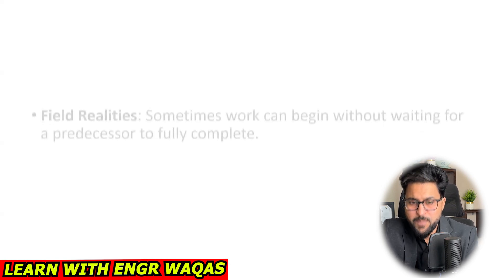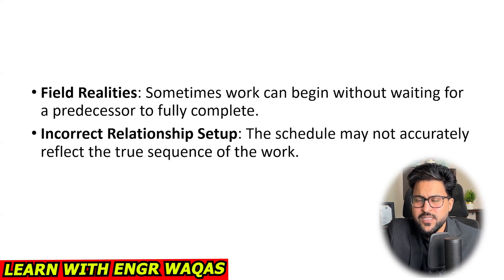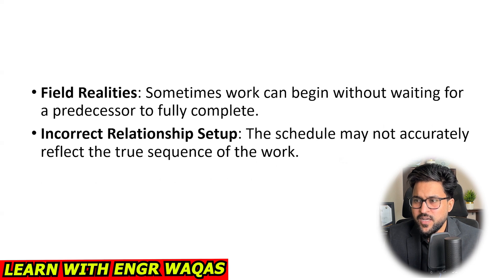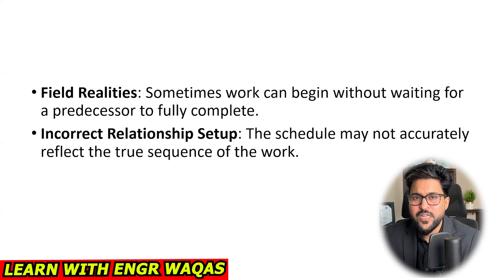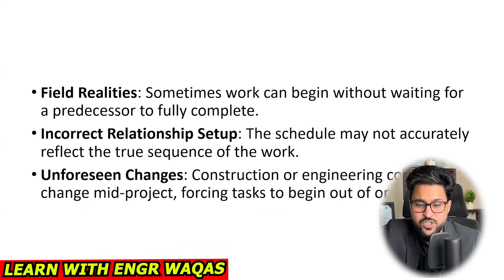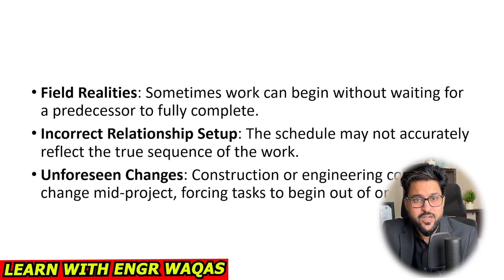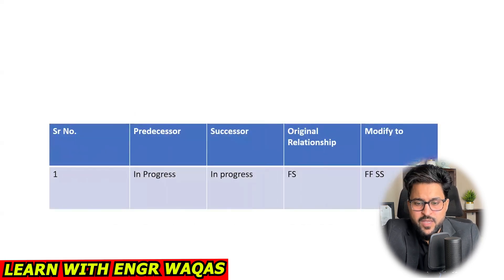Let's understand the typical reasons — they may ask you such things in job interviews. Typical reasons include: field reality, incorrect relationship setups (planning engineers sometimes develop hypothetical relationships, so you should be very logical and realistic while developing activity relationships), and unforeseen changes — construction or engineering constraints can also lead to out-of-sequence activities.